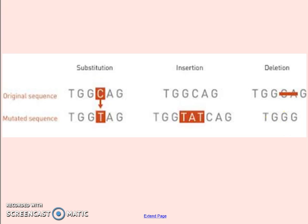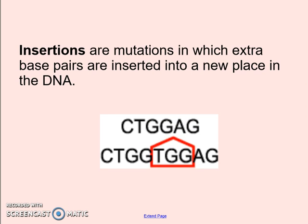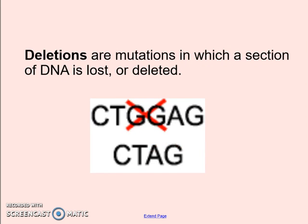Those letters stand for thymine, guanine, cytosine, and adenine — those are the four bases that make up the base pairs. So for substitution, you're switching — exchanging one base pair for another, such as switching your A to G. Insertion is where you're adding extra base pairs into the DNA. And deletion, you're taking a section out — it's been lost or deleted, it's gone.